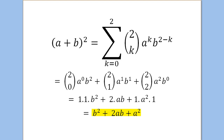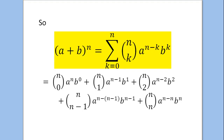We can do some simplification: anything choose 0 is 1, and n choose n is also 1 — two well-known results. Anything to the power of 0 is 1, and anything to the power of 1 is just itself, so a to the 1 is a and b to the 1 is b. That all simplifies down to b squared plus 2ab plus a squared — we can interchange a and b without losing generality. So this is our binomial expression: (a + b) to the n is the sum from k equals 0 to n of n choose k, a to the n minus k, b to the k.